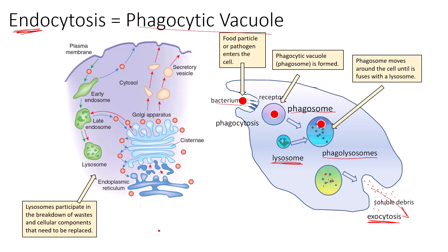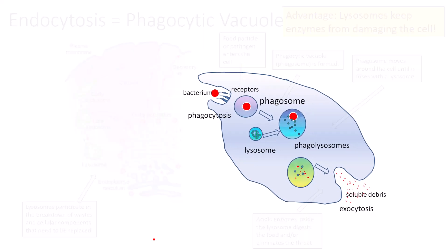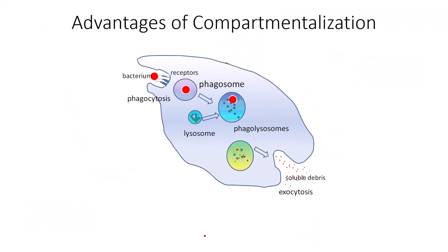Phagocytic vacuole: the phagosome is formed. The phagosome moves around the cell until it fuses with a lysosome. Acidic enzymes inside the lysosome digest the food and/or eliminate the threat. An advantage of this particular pathway is that lysosomes keep enzymes from damaging the cell. These enzymes are very good at digesting cellular material — if they were not walled off or kept within this particular vesicle they would degrade all of the good cellular components that we want to keep. But because we keep them in their individual compartment they don't hurt our cells. That is obviously one of the biggest advantages of compartmentalization: this use of lysosomes.